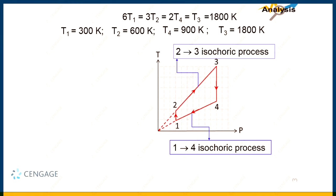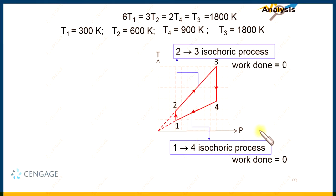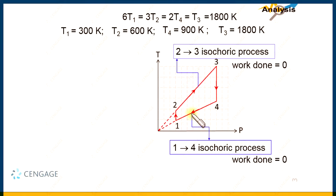We know that work done in any process depends on the change in volume. If there is a change in volume, there will be work done. If there is no change in volume, there will not be any work done. Because these are isochoric processes, the work done in these two processes will be equal to zero. That means, out of the 4 processes, we have 2 processes where work done is equal to zero.